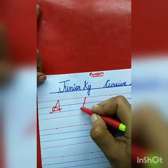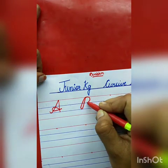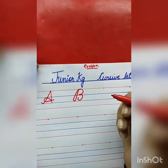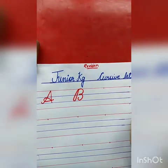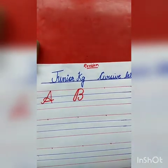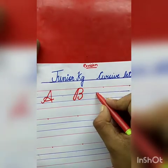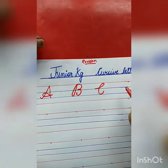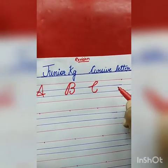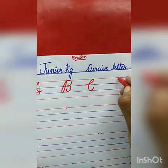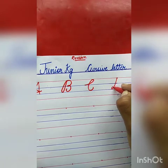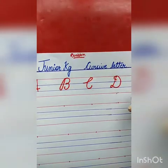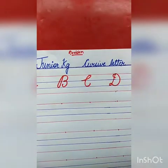Now the next letter is B. B for ball. The spelling of ball: B-A-L-L. Now tell me the next letter. C — very good! C for cat. C-A-T, cat. Now tell me the next letter. D — very good! D for duck. D-U-C-K, duck.